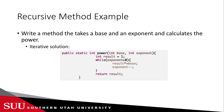Let's look at another example: write a method that takes a base and an exponent and calculates the power. An iterative solution defines a method with integer return type taking the base and exponent, then multiplies the base by itself, decrementing the exponent each time. For example, if base is 2 and exponent is 3, multiply 2 by itself three times and return the result. Now, can we convert this to a recursive method?